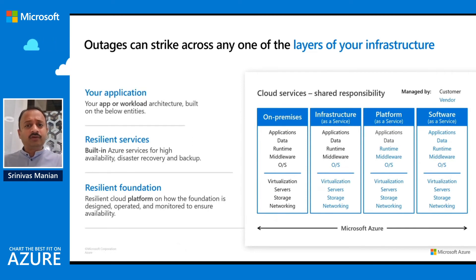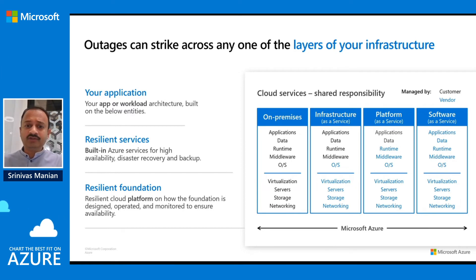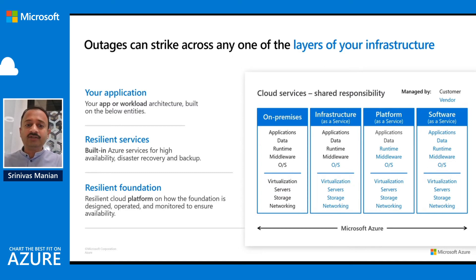Outages can strike across any of your layers on your infrastructure. It could be your infrastructure, your platform, and your software services. And it's going to be a shared responsibility when it comes to building resilient infrastructure and services for your application workloads. Particularly, if you look at on-premise today, how we are running resilient services, the customer has complete responsibility in managing your infrastructure layer as well as your application layers on-prem. When you are migrating and modernizing infrastructure and adopting infrastructure as a service platform, the cloud provider such as Azure is offering resilient services on the platform itself.